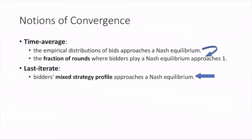This leads us to further think about the last iterate convergence, where the bidder's mixed strategy profile approaches the Nash equilibrium. We fully characterized the Nash convergence properties in terms of these two kinds of notions, showing the differences based on different cases of bidder's values.